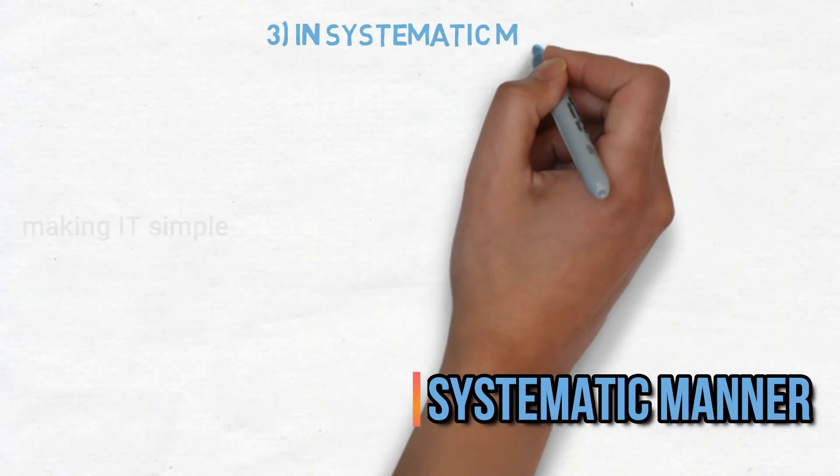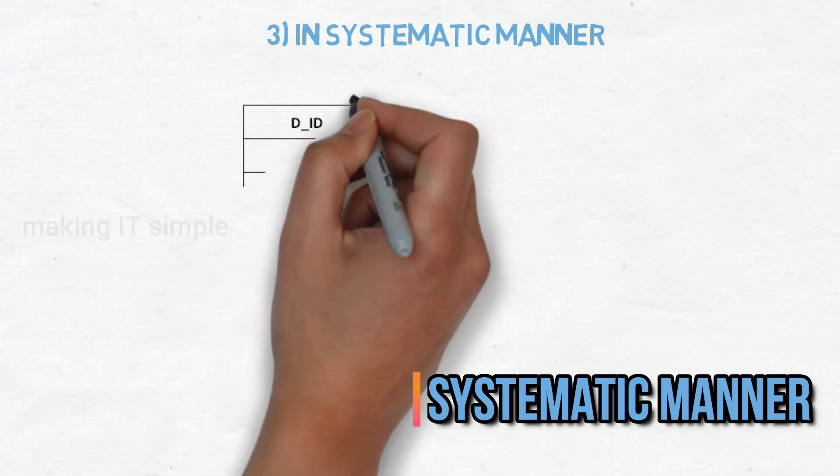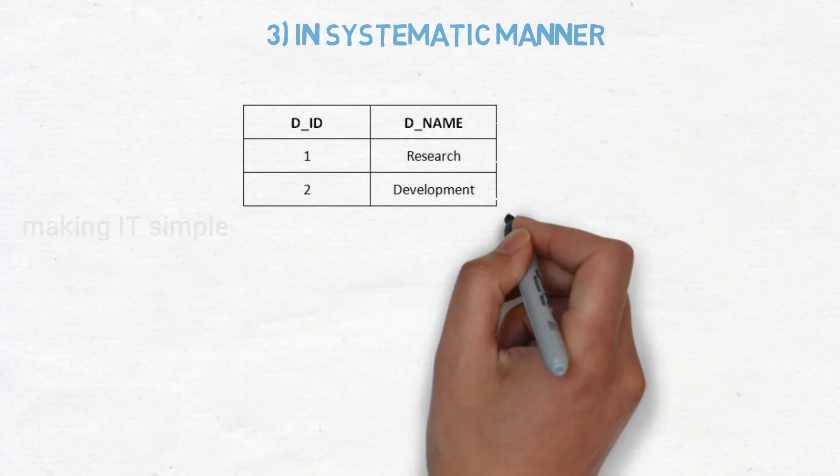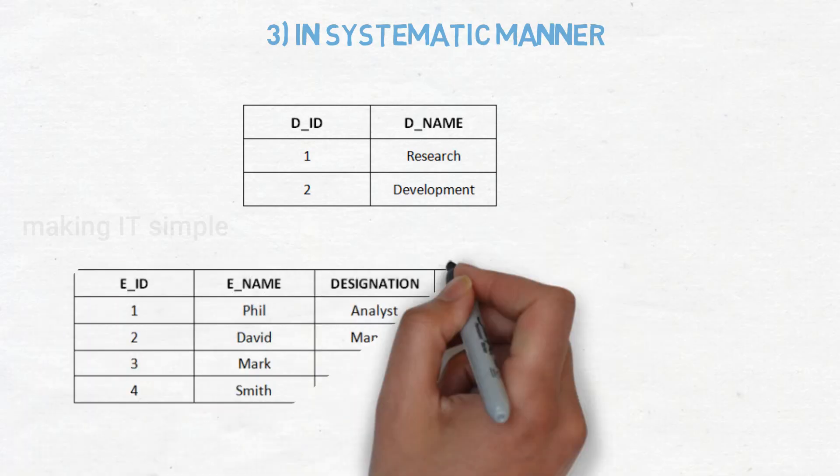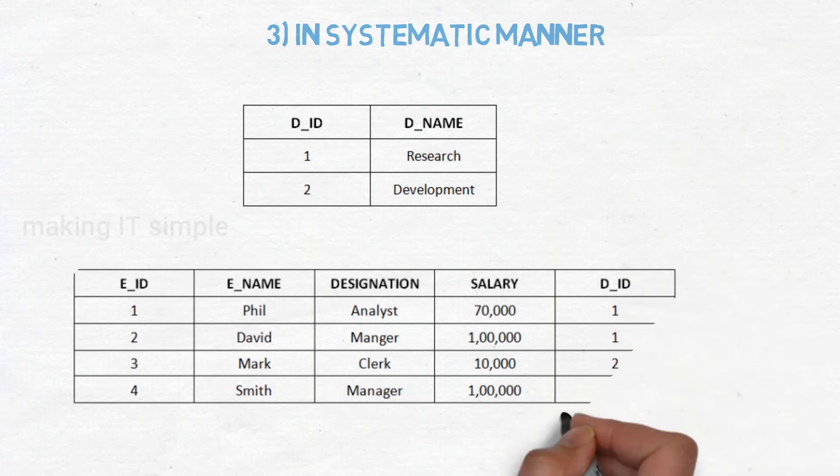In a systematic manner. In database data is stored or arranged in systematic manner. Data is stored in tables, in row and column format. Data is not stored anyhow. Let us see one example of database.